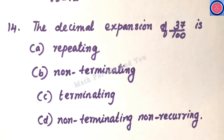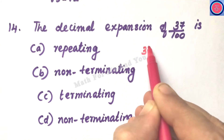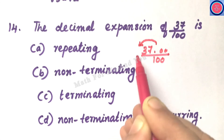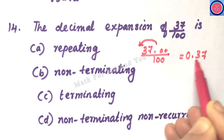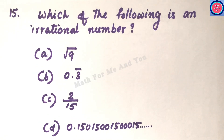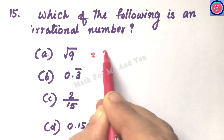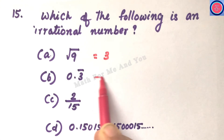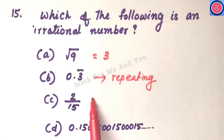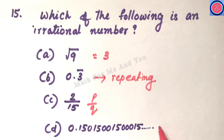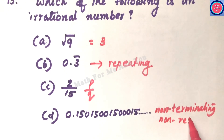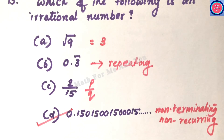Q14: The decimal expansion of 37/100. Dividing by 100 moves the decimal point two places left, giving 0.37 — a terminating decimal. Q15: Which is an irrational number? √9 = 3 is rational; 0.3̄ = 0.3333... is a non-terminating repeating decimal, which is rational; 2/15 is of the form p/q, rational. The last option is a non-terminating non-recurring decimal, which is irrational — so option D is the correct answer.